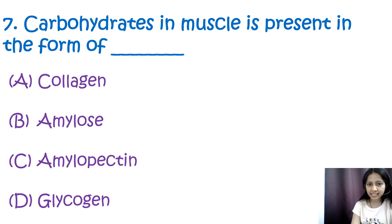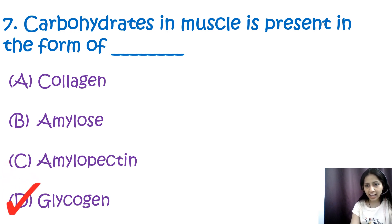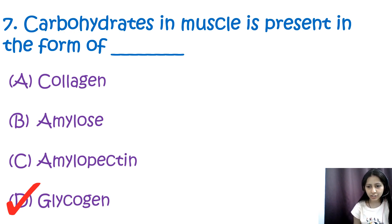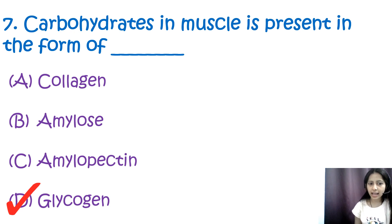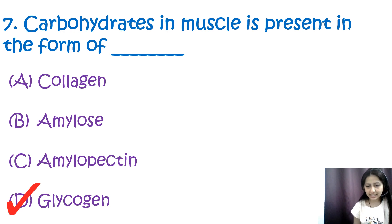Question 7: Carbohydrates in muscle are present in the form of — options are collagen, amylose, amylopectin, and glycogen. The correct answer is D, glycogen. Glycogen is the primary storage form of carbohydrates, mainly found in the liver and skeletal muscles. When energy is needed, the body breaks down stored glycogen into glucose units, which cells use for energy. Collagen, amylose, and amylopectin are not found in body muscles.